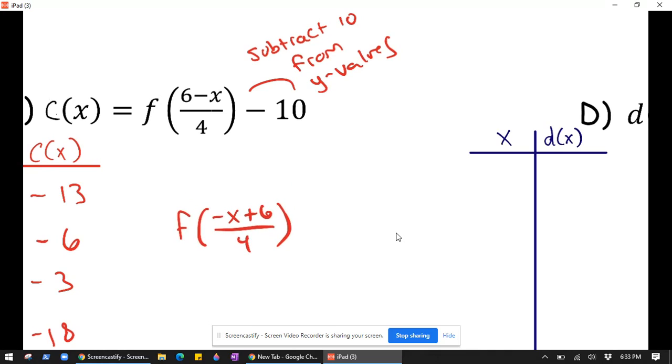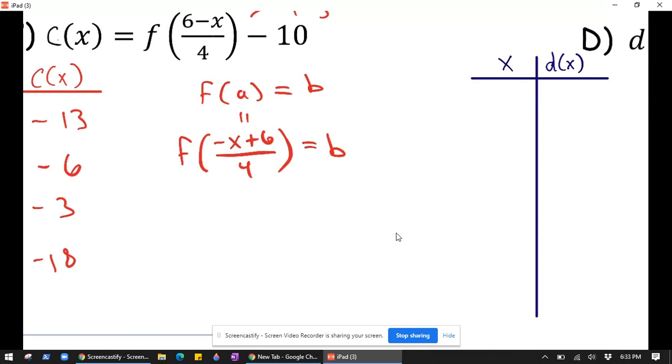Right, so let's say we want to figure out what x would have to be, the new x values. Again, we start with the fact that if f of a equals b, a is our old x values. If we want this to equal b, we need those to be the same. So negative x plus 6 over 4 would have to equal a.